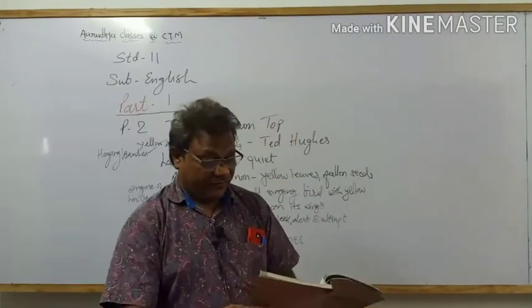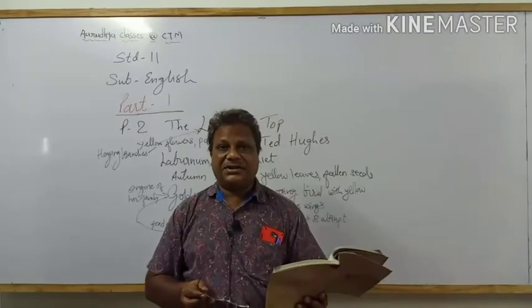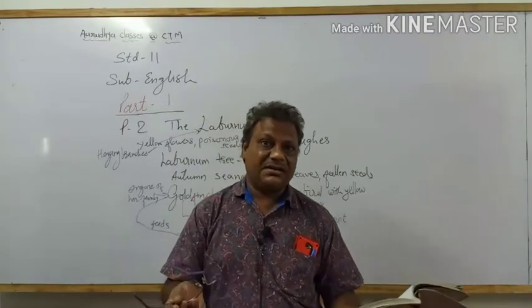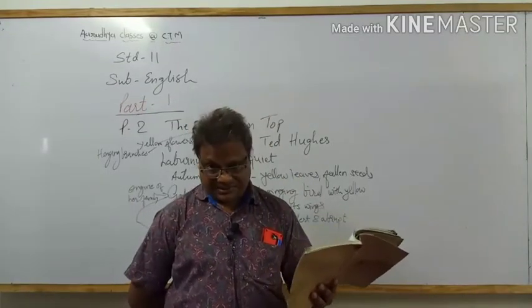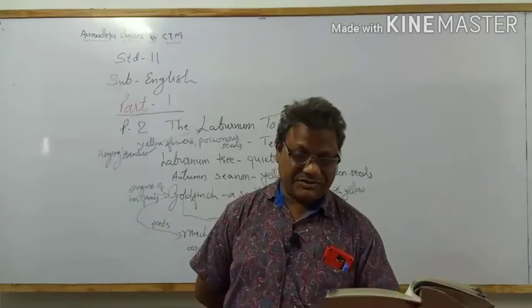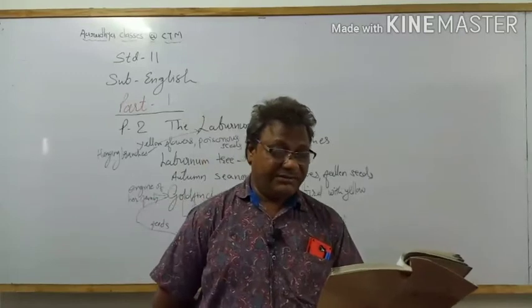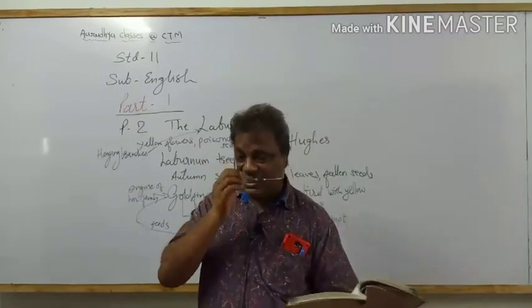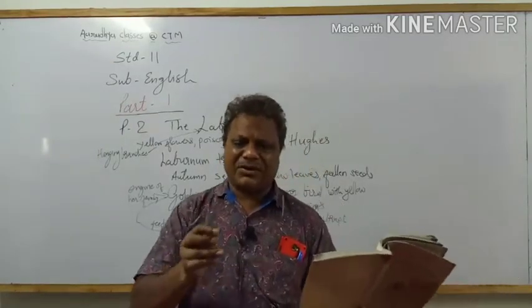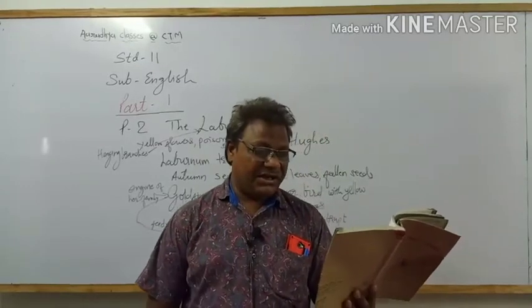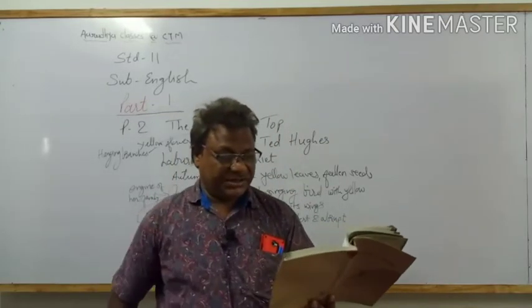Now we will look at the figures of speech. 'The Laburnum top is silent, quite still' — the Laburnum top is given the quality of being silent, so it is personification. Also, 'silent' and 'still' both mean the same thing, so it is tautology. 'In the afternoon yellow September sunlight' — the S sound is repeated in September and sunlight, so it is alliteration. 'A few leaves yellowing, all its seeds fallen' — leaves and seeds are parts of the Laburnum tree, so it is synecdoche. These also suggest the autumn season, so it can also be considered metonymy.